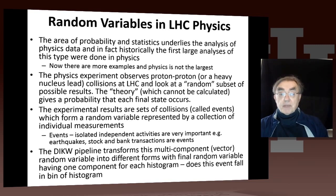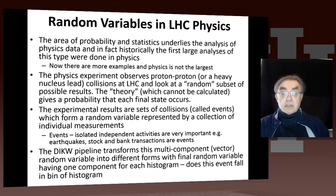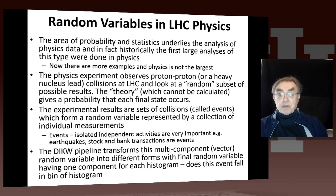So we have these collisions, which are all random. And then we have results — which are actually called events. These are very complicated events, because they record everything that happened in the collision, and they represent a random variable which is a sort of vector, since there are lots of results. And that vector has a different length on every collision, because you produce a different number and type of final state on every collision.